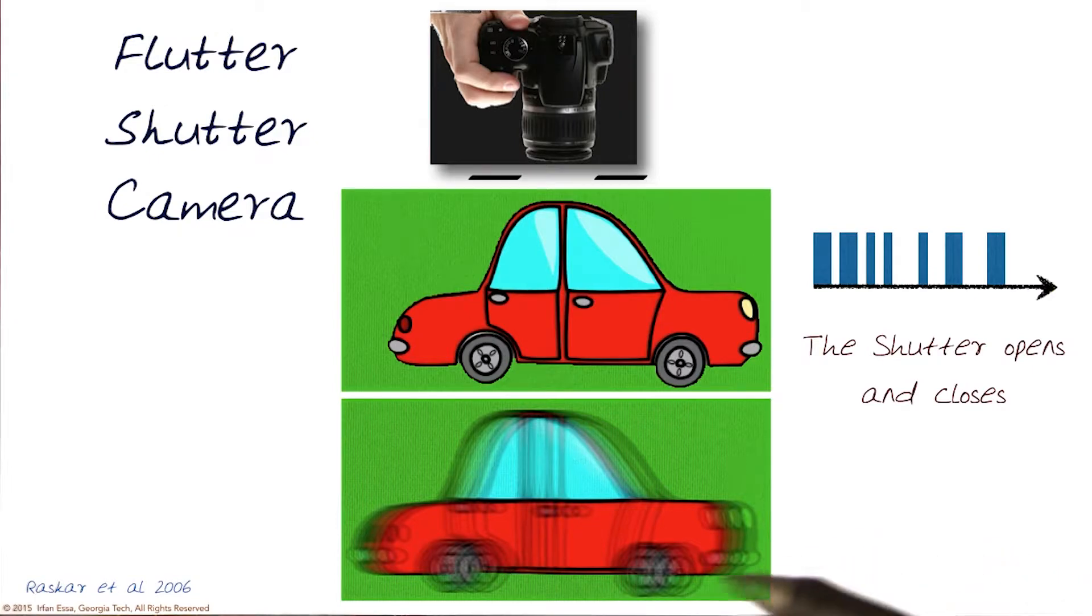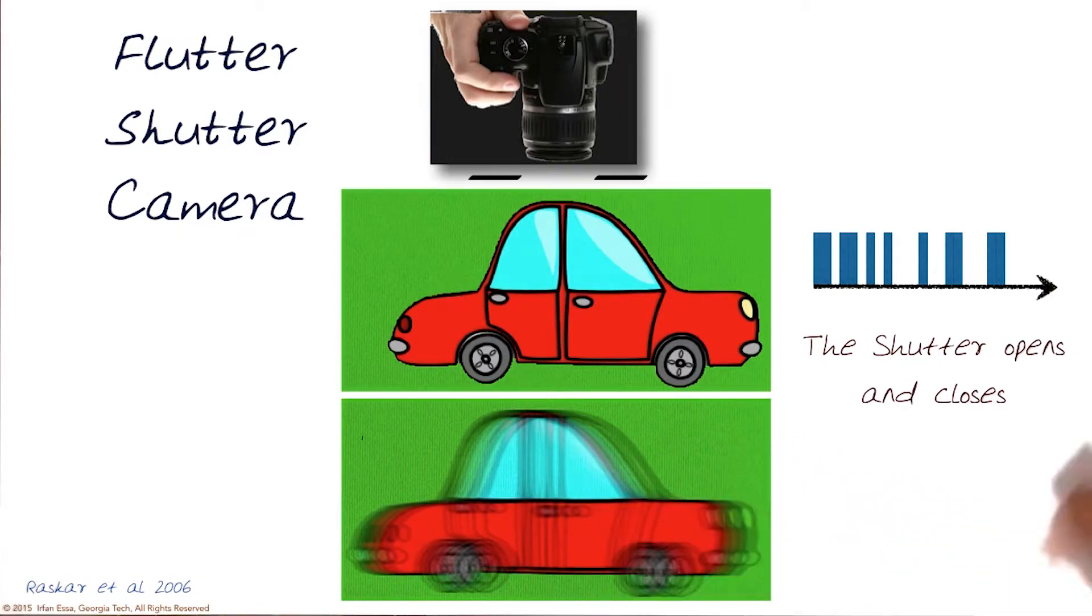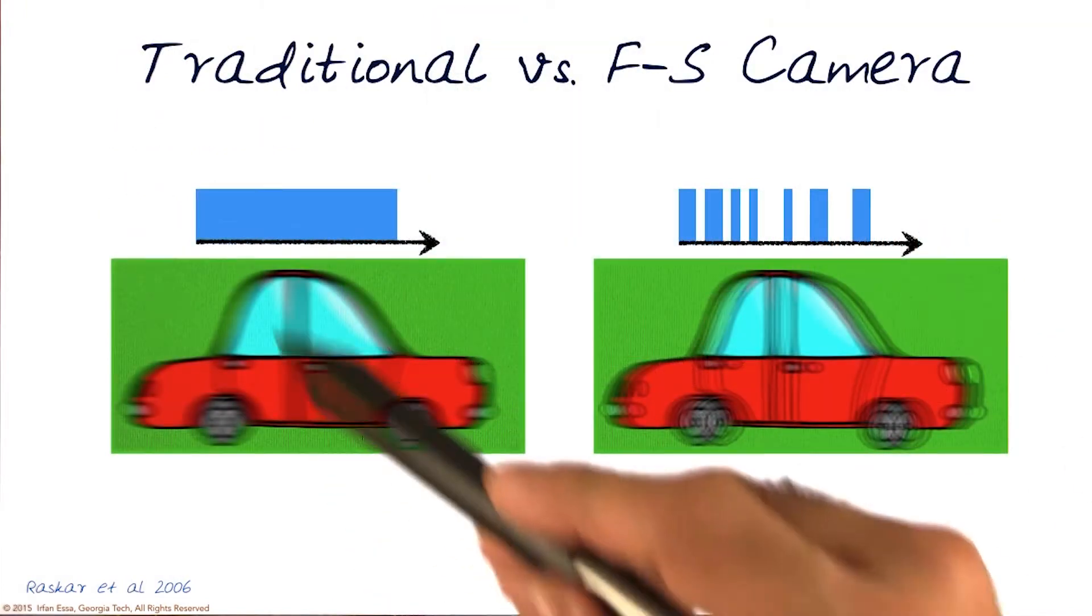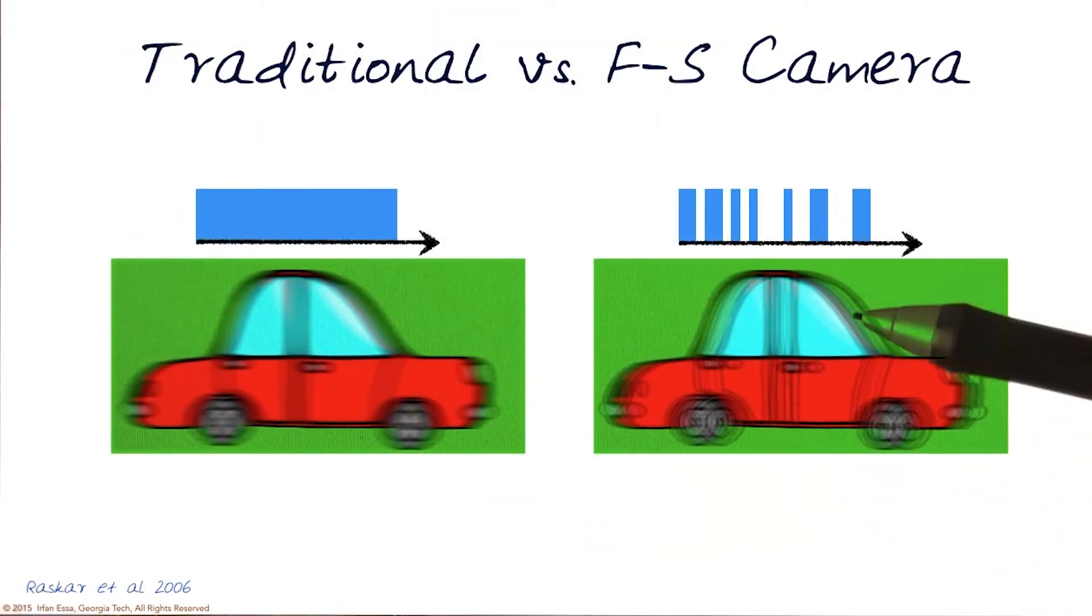Now I do get a motion blur image, but if you notice, this one has very specific sharp lines. Let's look at them next to each other. This was when the shutter was open the whole time, and this is when we flutter shuttered it - opened and closed it at different rates.